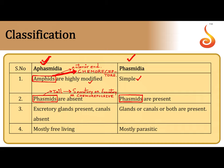In Aphasmidia, excretory glands are present but longitudinal excretory canals are absent. Such canals, which normally run throughout the body in Aschelminthes, are replaced by groups of cells involved in removing excretory products from the body fluid. In Phasmidia, however, both excretory glands as well as excretory canals are present.